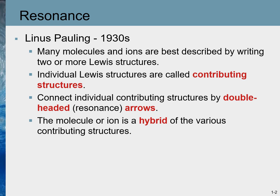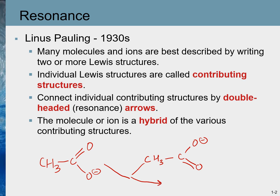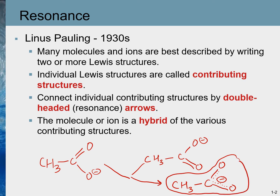What do we mean by that? In case of acetate ion, the two structures are: one structure and then the other one. The composite of these two structures is a structure in which both carbon–oxygen bonds have some partial double bond character, and the negative charges are delocalized throughout both of these bonds. So this would be the composite structure of these two possible Lewis structures of acetate ion.